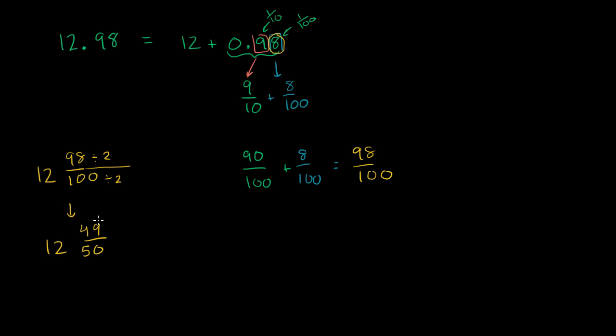And I think that's about as far as we can do. 49's factors, it's divisible by 7, but 50 isn't. So we've put it in lowest terms. So 12.98 can be written as a mixed number, 12 and 49 50ths.